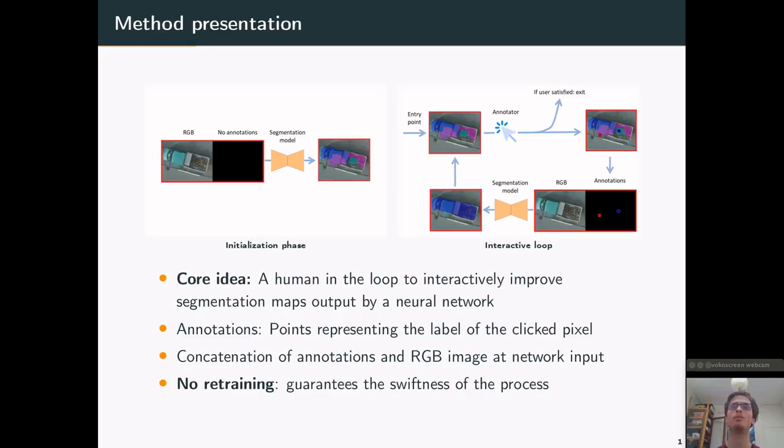These annotations represent the labels of the clicked pixels, and they are concatenated at the input of the network with the RGB image. So there is no retraining. Indeed, it is only the inputs of the networks which are modified and not its weights. And this guarantees the swiftness and the smoothness of the approach.